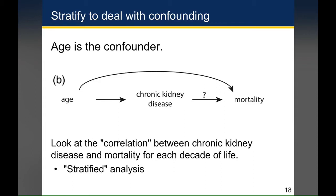Similarly, you could do that for each decade of life — 30-year-olds, 40-year-olds, 50-year-olds, 60-year-olds, 70-year-olds, 80-year-olds. What you might find is that in some decades of life, having chronic kidney disease does raise your risk of death, and that risk may actually be different in different decades. For example, if you're looking at 80-year-olds, chronic kidney disease might not raise your risk of death by as much because the risk of death is already higher based on age alone.